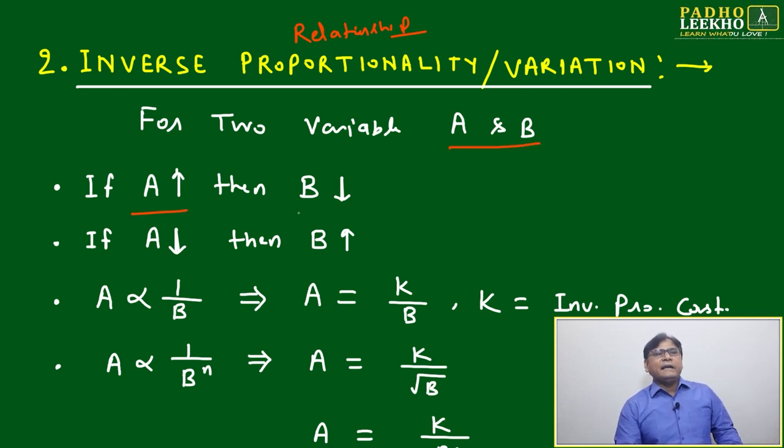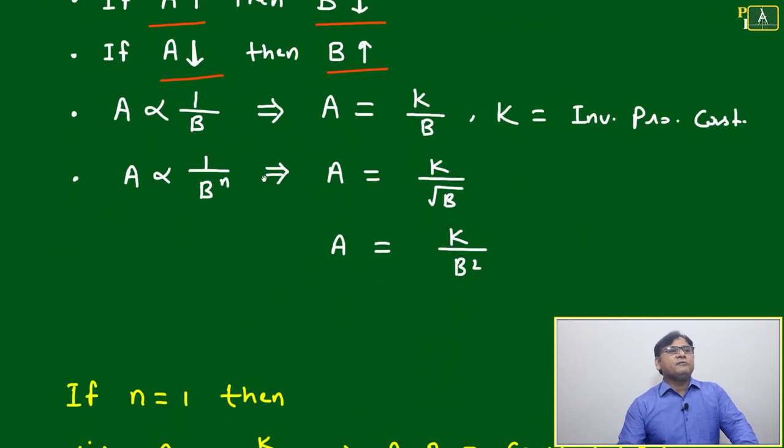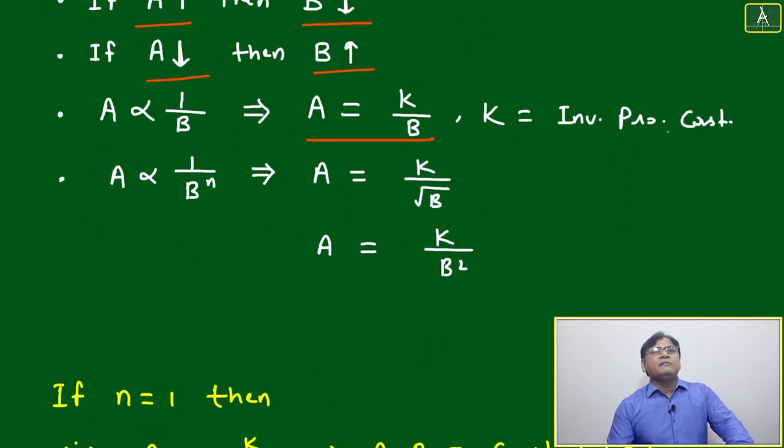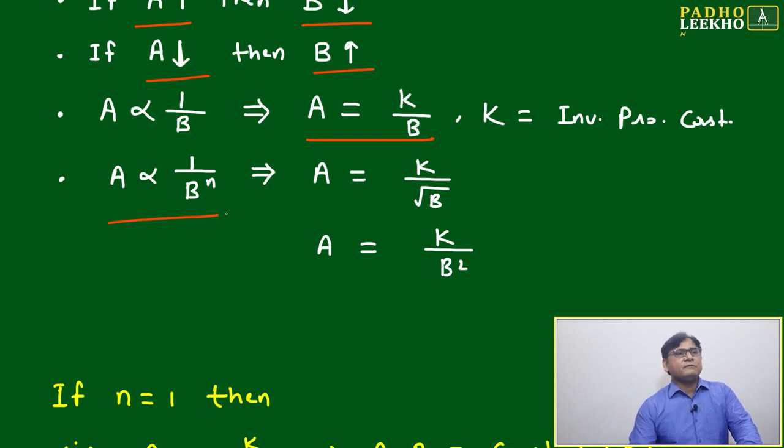For the two variables again A and B, if A is increasing B will decrease, A is decreasing B will increase, but how much we are not sure, depends on the type of the variation. If A is inversely proportional to B, then A will be equal to k by B, where k is the inverse proportional constant.